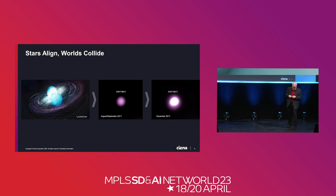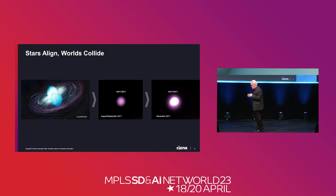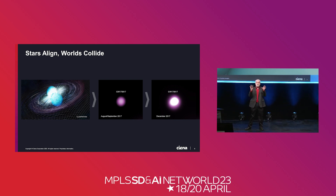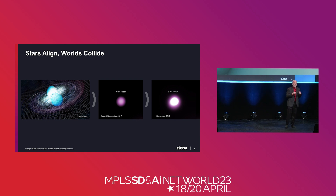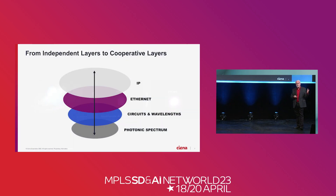Every once in a while, nature cooperates. If you're into astronomy, you'll remember the event where two neutron stars came together and created something never before seen in the universe — a supermassive star. Every once in a while you can ask: can we take that kind of principle and apply it into our space? Are there some things that we can now do that we could never do before? And the answer is yes, we can.